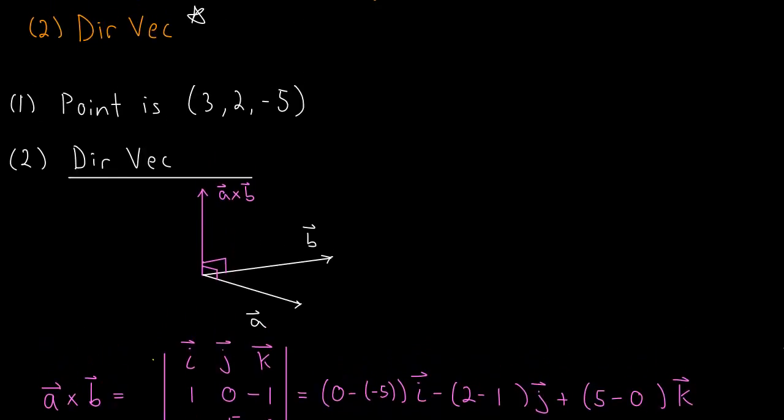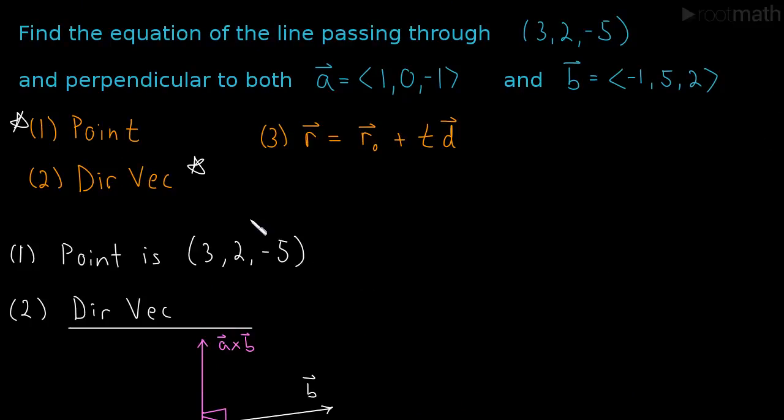Back to the beginning of our discussion, what did we need? We needed a point and a direction vector. We were told a point. It was (3, 2, -5). We just figured out a direction vector. It was our A cross B, which turned out to be (5, -1, 5). And so now we just use step 3, which is just using that formula. The final answer is the equation of the line is R equals, and then we just take our point and convert it to a position vector. So this is just (3, 2, -5) plus our variable T, this is just a scalar, just a real number, stands for time, times our direction vector, which is (5, -1, 5).